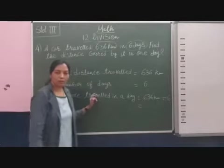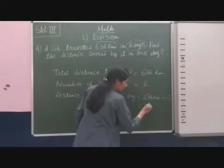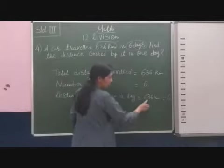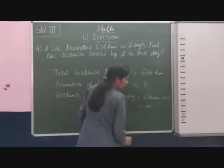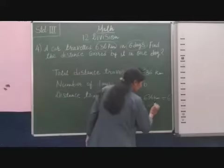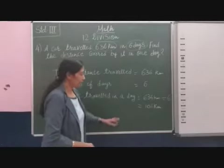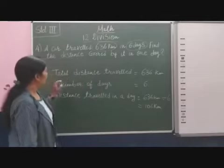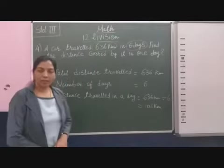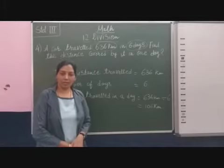So, you do here through the long division method. So, 6 ones are 6. Then, we put 0. Then, 6 threes are 18. So, we get as the quotient here 106 km. So, we can say that a car travelled 106 km in a day.